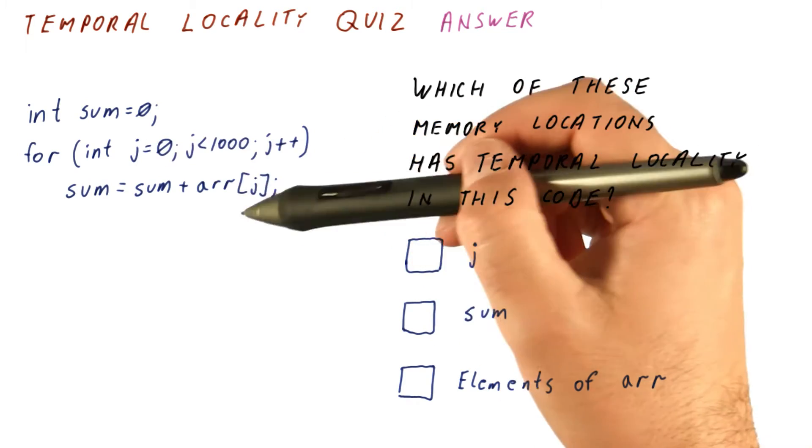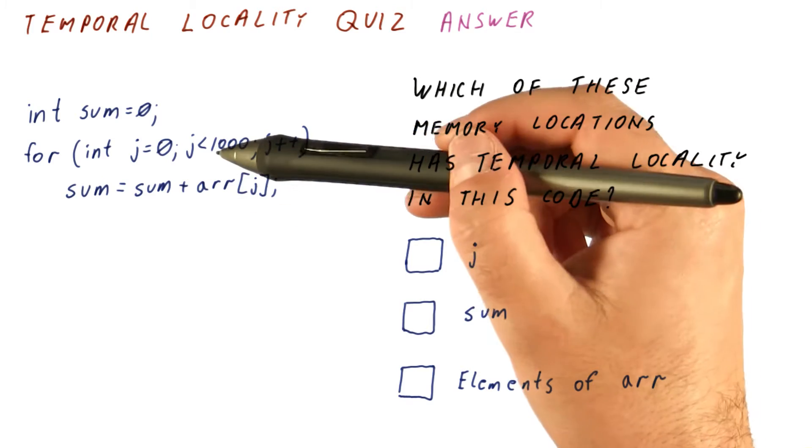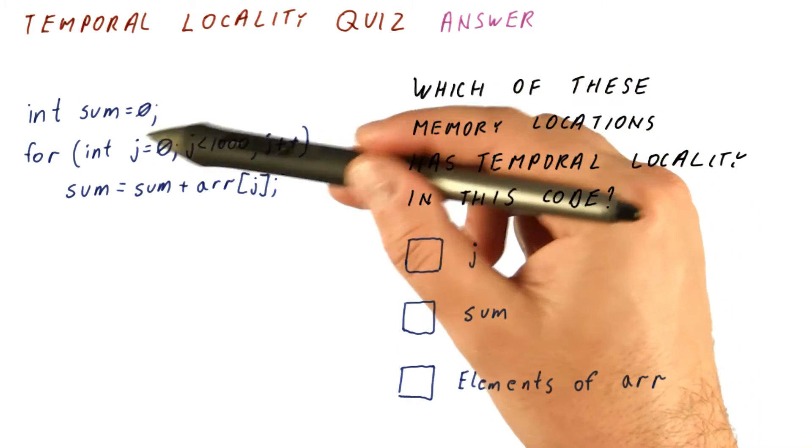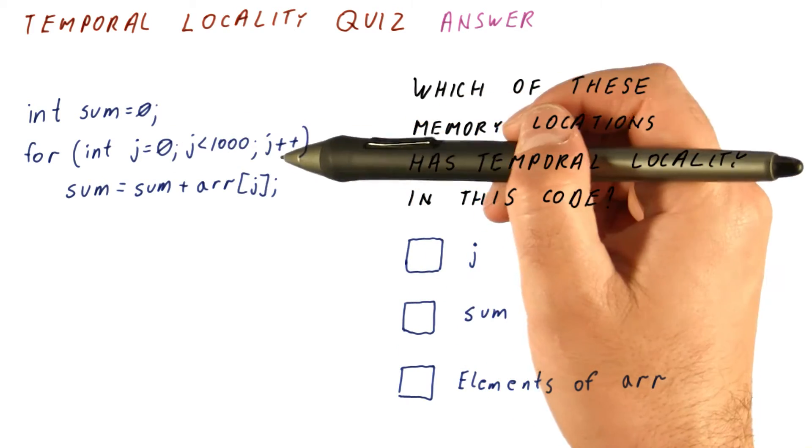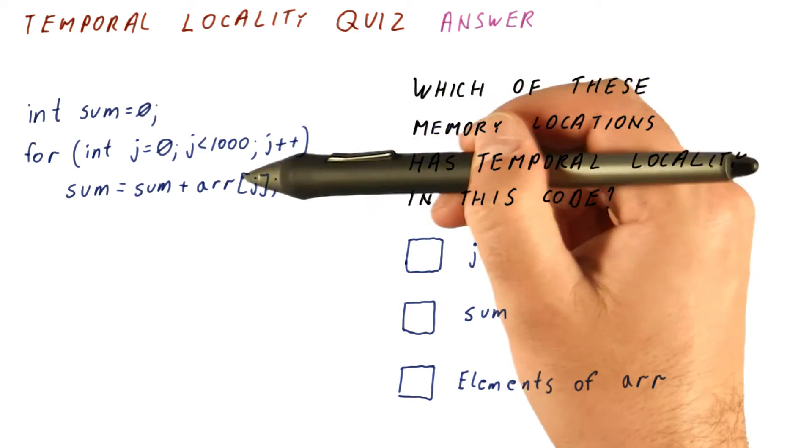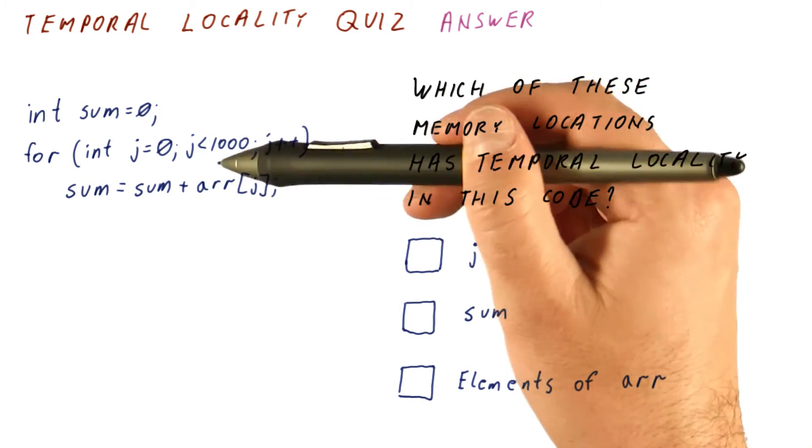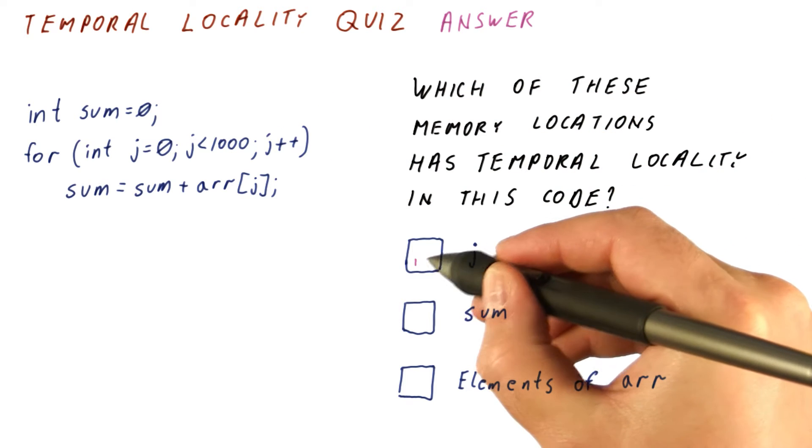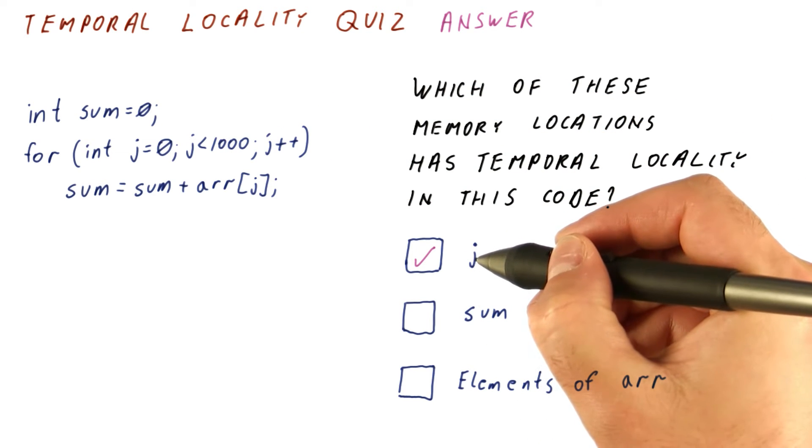Actually, once we begin accessing it, it's going to be accessed a lot. It's going to be accessed to initialize it, to check if it's less than 1,000, to access the array, to increment it, to check, to access, to increment, many, many times. So this variable definitely does have temporal locality.